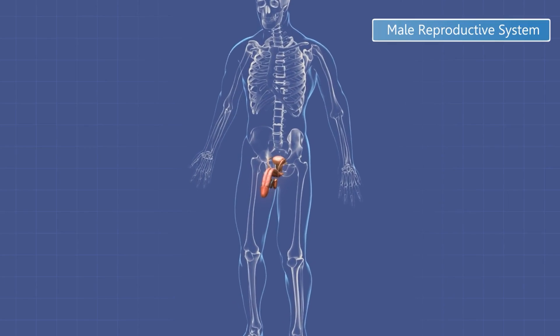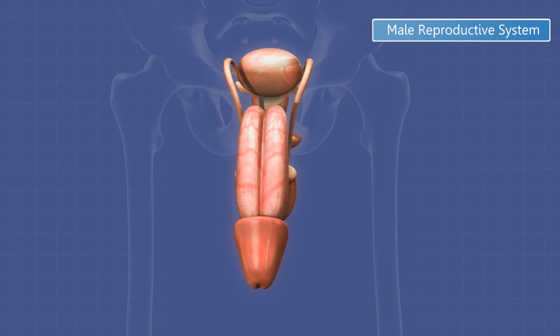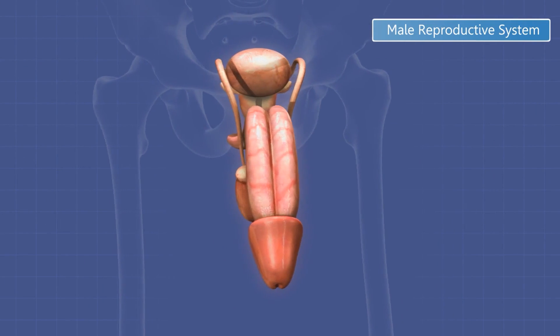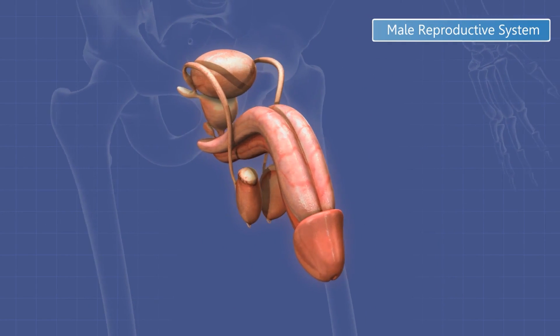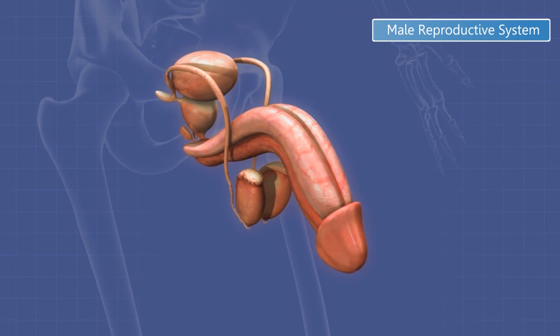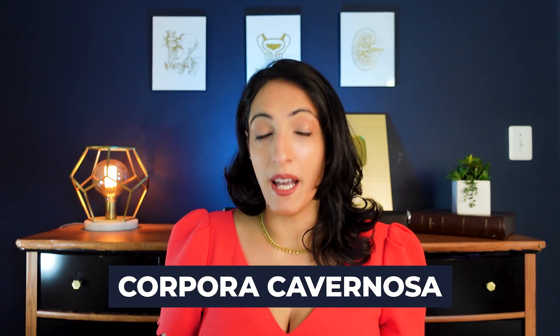We're going to start by talking about the penis. Everyone knows where the penis is and what it looks like, but let's talk about the parts of the penis. Within the penis, there's the erectile tissue — two cylindrical structures on either side that engorge with blood when you are having an erection. These are called corpora cavernosa.